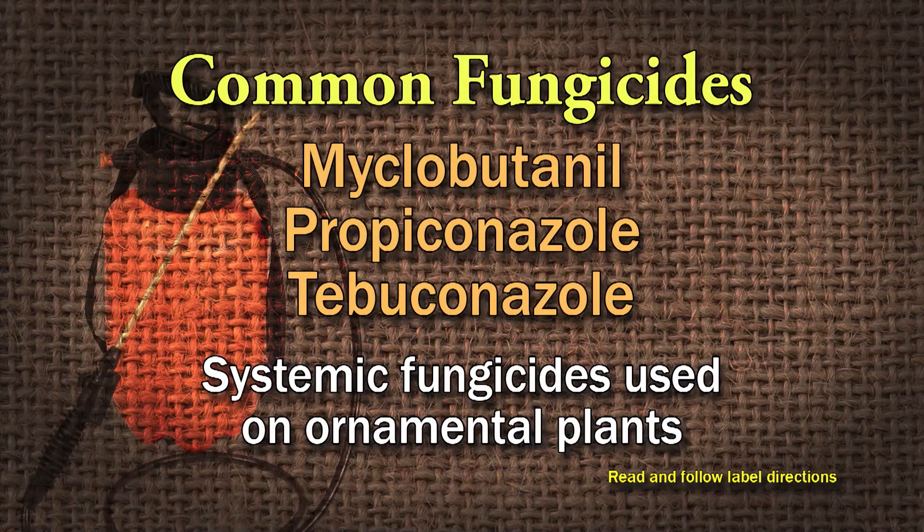When you get into roses and ornamentals, myclobutanil, propiconazole, and tebuconazole are some of the systemic types. Systemic means it is absorbed somewhat by the plant. There are locally systemic fungicides absorbed by the leaf that may move a little bit into the leaf. Some are more systemic, moving into the leaf and up to the end of a shoot or growing point. Newer fungicides are totally systemic and move throughout the plant, all the way to the roots. Those give you about 7 to 21 days of control.